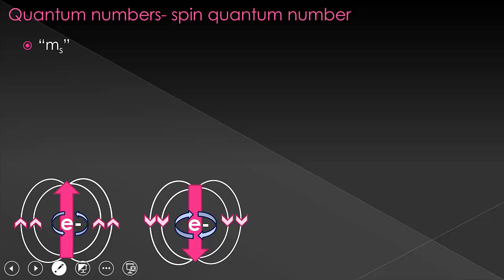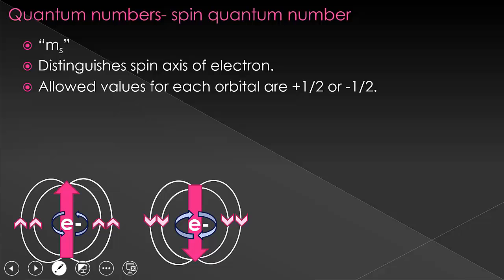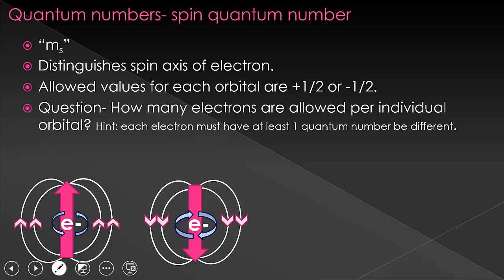Now let's do our last one: the spin quantum number, M sub S. This distinguishes the spin axis of an electron. It is what decides how many electrons we are capable of having in each orbital. The Pauli exclusion principle says that we aren't allowed to have two electrons in one atom that all have the exact same quantum numbers. So each orbital must have at least one quantum number different than any of the other electrons. In quantum terms, this is like saying M sub S equals plus one-half or minus one-half. Each orbital may have an electron with a plus one-half and an electron with a minus one-half. There are no other rules for this quantum number. This gives us two electrons per orbital.